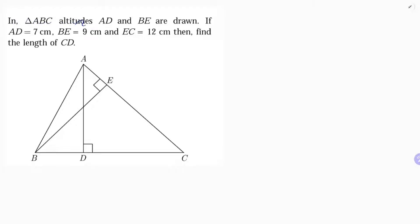In triangle ABC, altitudes AD and BE are drawn. If AD is 7 centimeters, BE is 9 centimeters, and EC is 12 centimeters, find the length of CD. Let's consider CD as X centimeters.